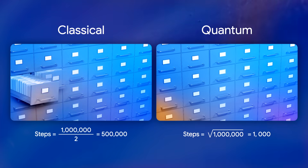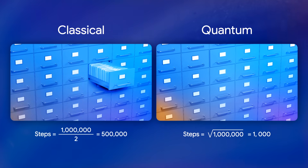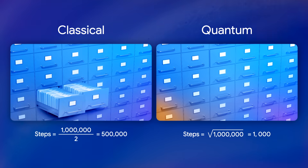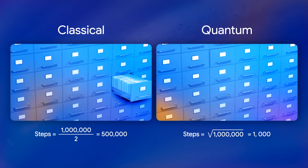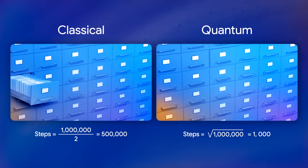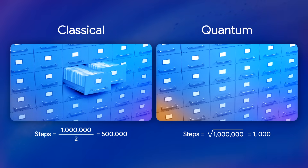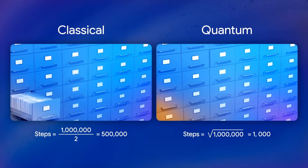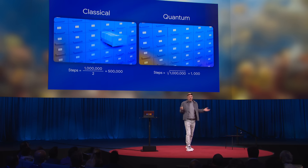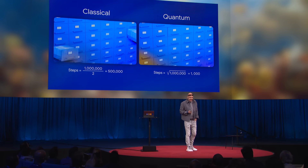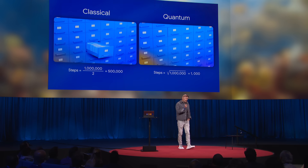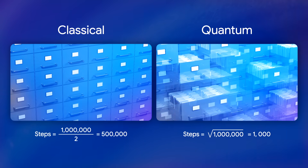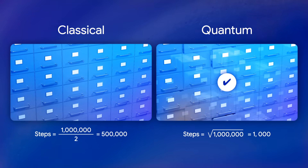This superpower can be applied to computation. Picture a search task by envisioning a very tall closet with a million drawers. I place an item in one of the drawers. How many drawers do you have to open to find the item? On average, it will be half a million. But if you had access to a quantum algorithm, it would only be a thousand steps to find the item.